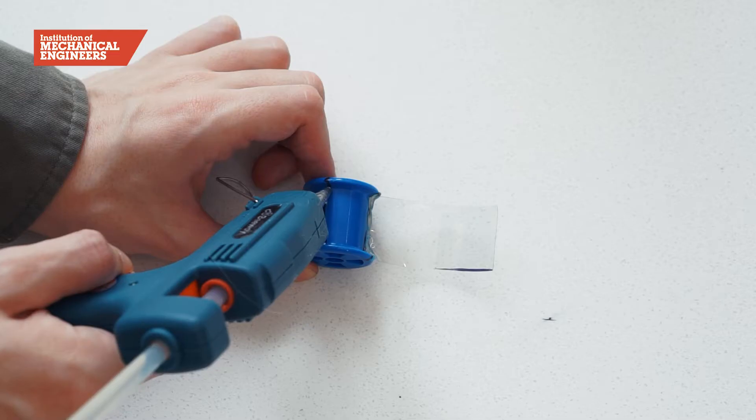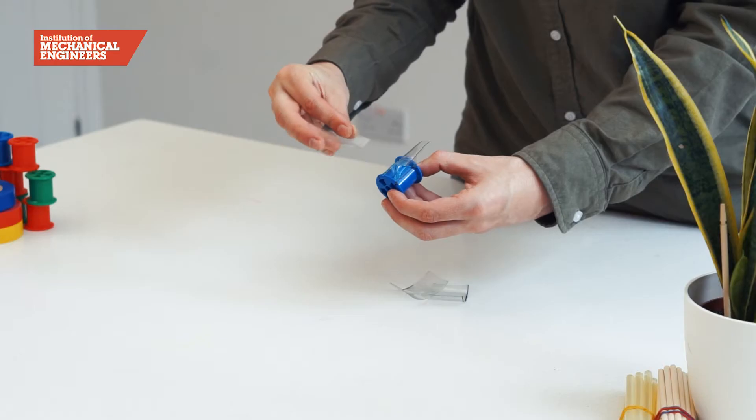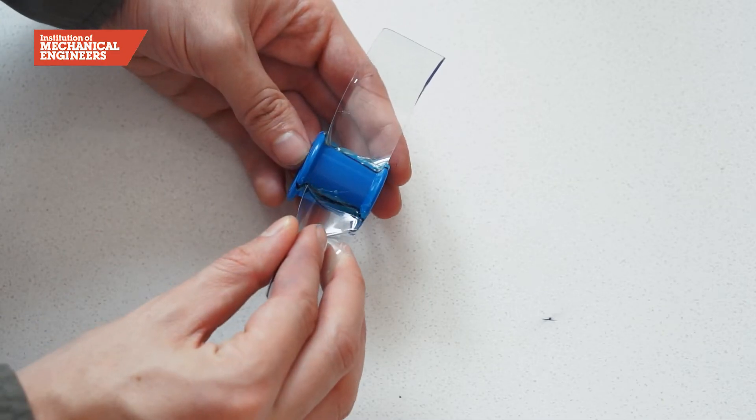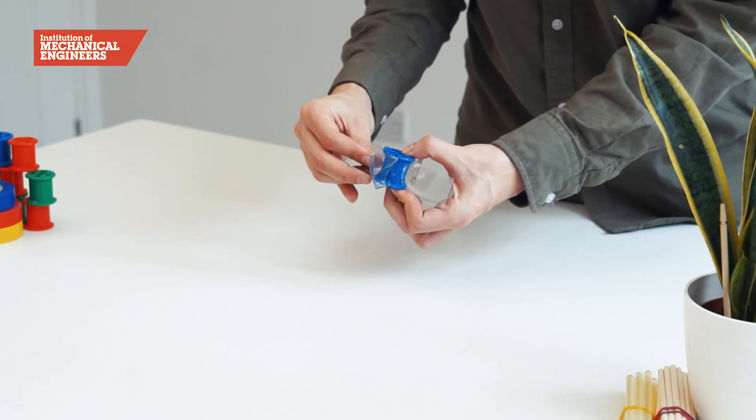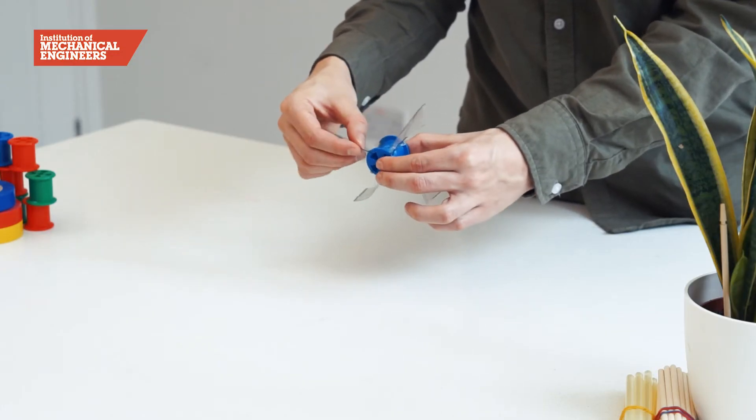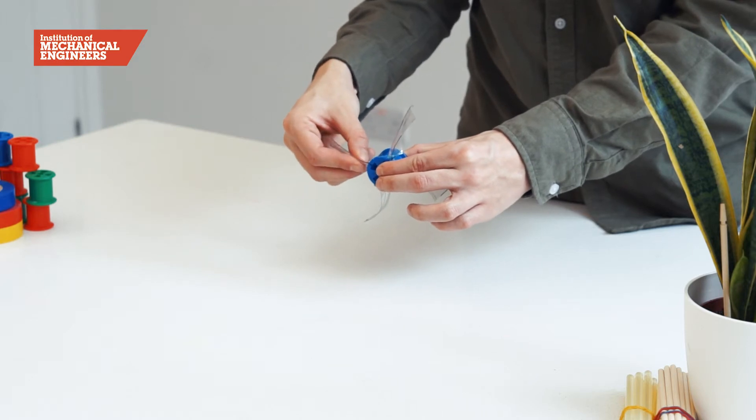Next glue the turbine blades onto the marked lines using a hot glue gun. You will need to squeeze the two edges of the blade together slightly as you glue it because it is wider than the cotton reel. This will create a scoop shape to catch the water.